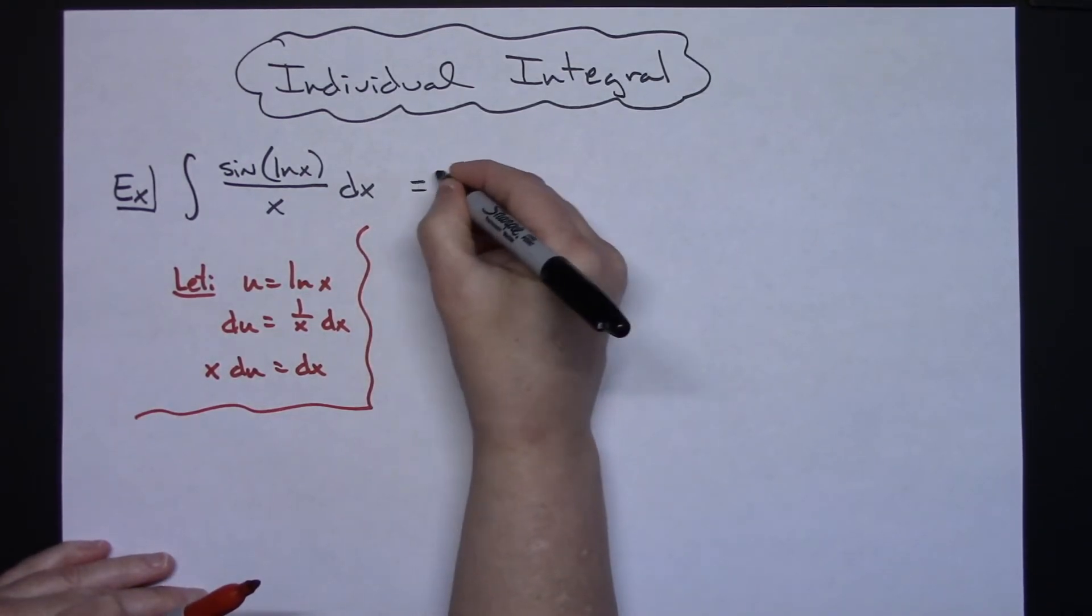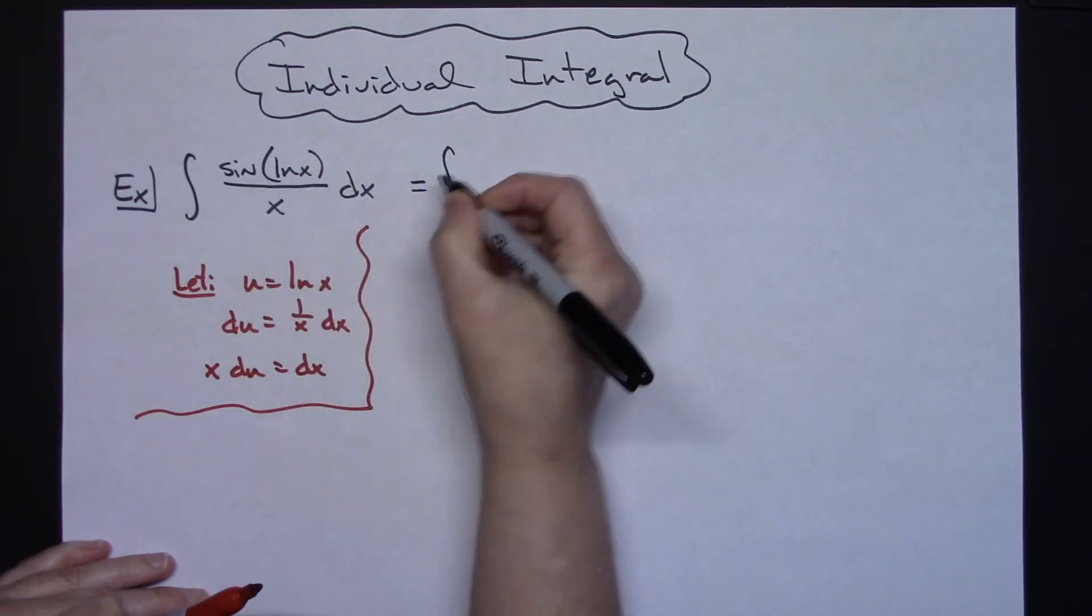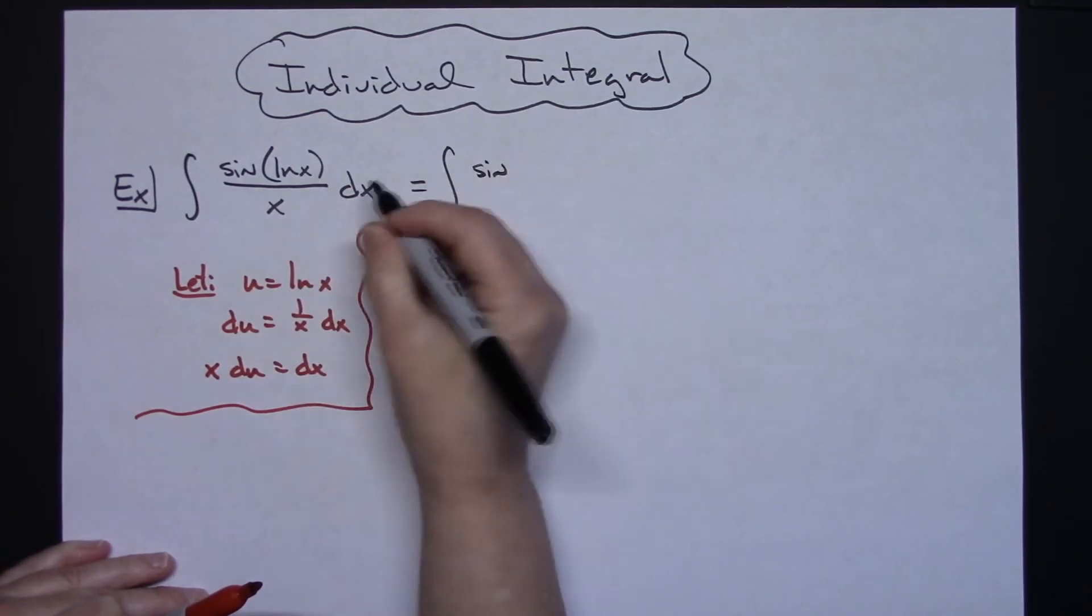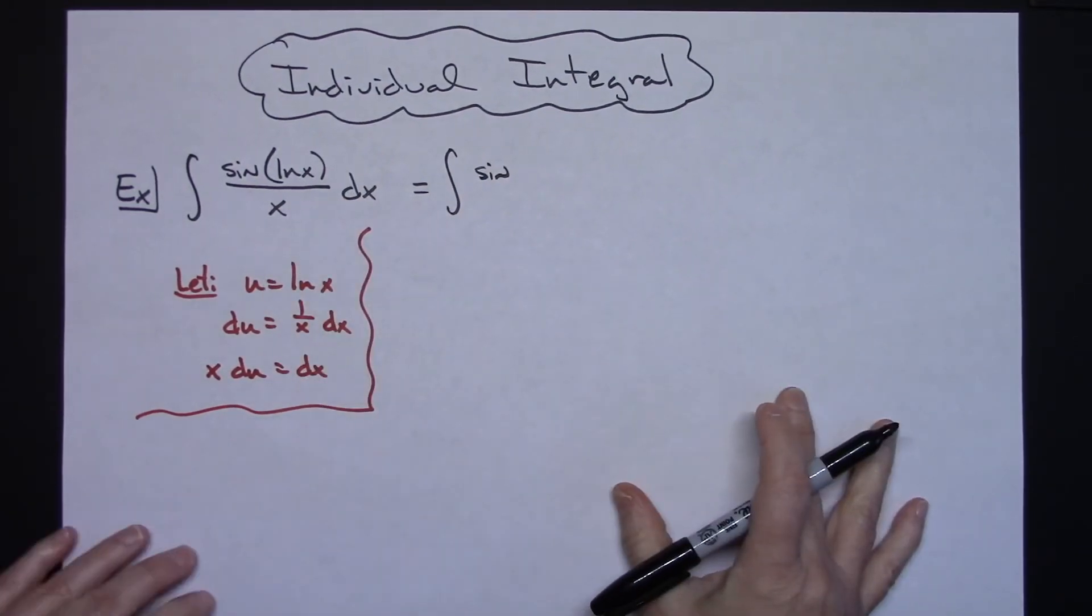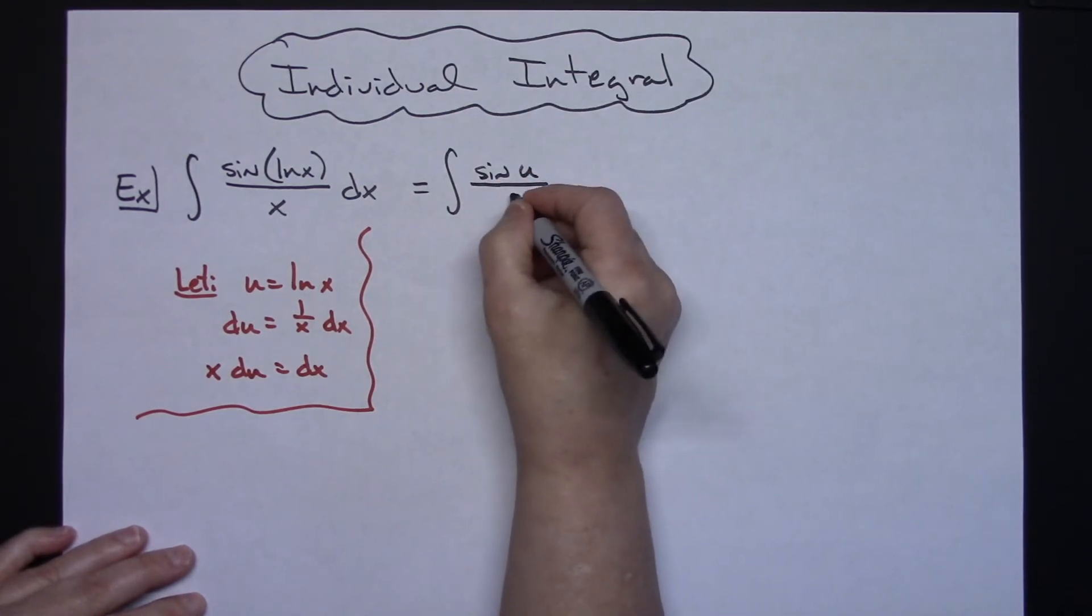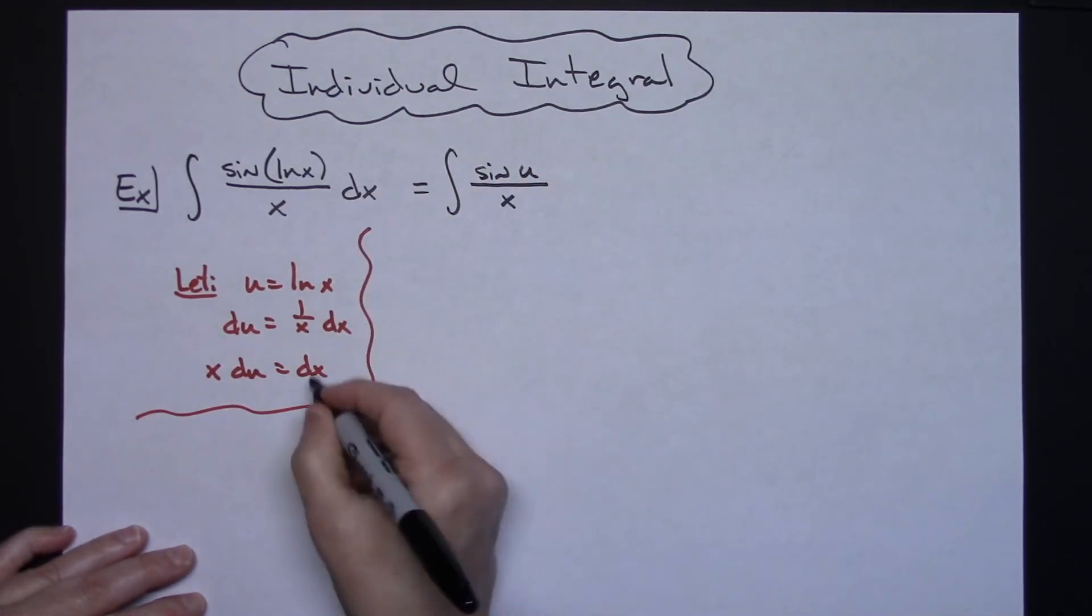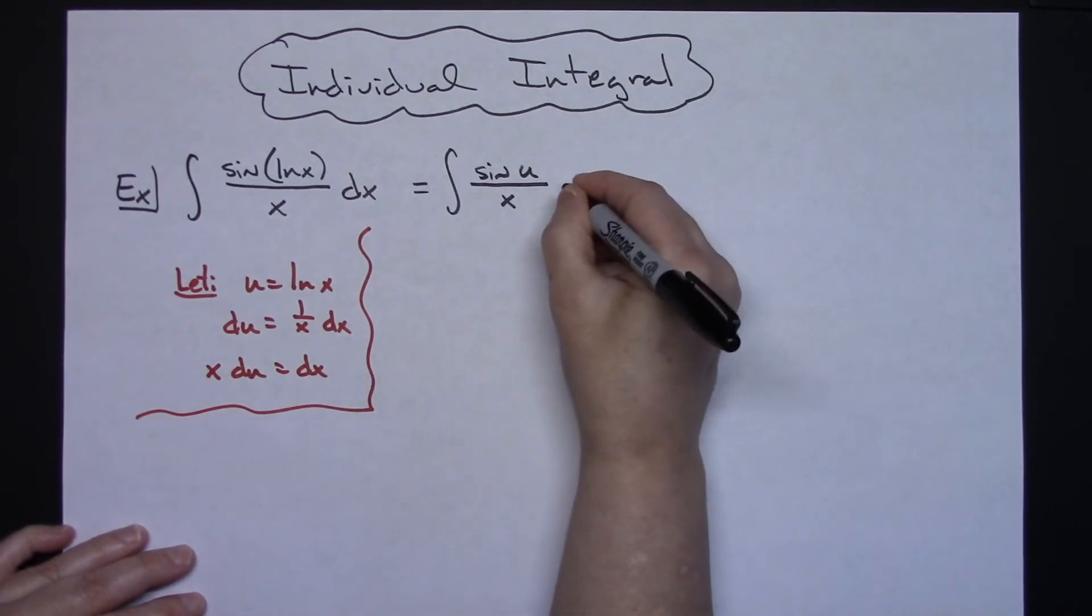We're going to then come back up here and we're going to do some substitutions. We'll have the sine and then natural log of x we said was u, so we will replace that with u. We'll keep the x on the bottom and we'll replace our dx with x du.